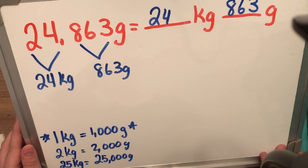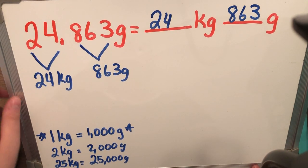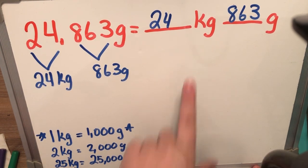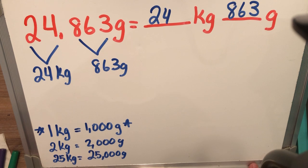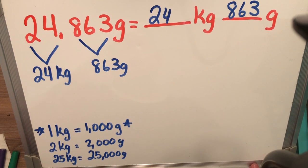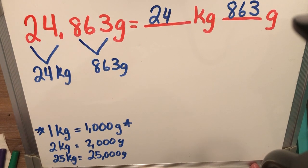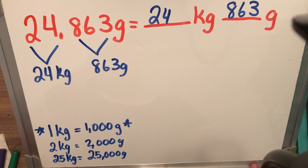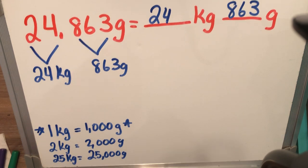And I have 863 grams left over. That's how you solve problems like these. I know that I had 24,863 grams altogether. But to find my kilograms, I just have to do a little remembering going backwards. 24,000 grams is really 24 kg. And then, I still have my leftover 863 grams. Okay.